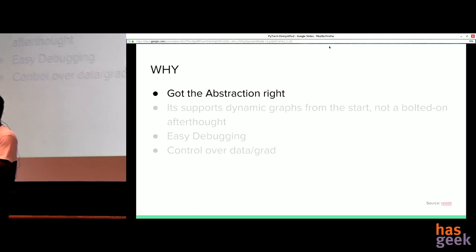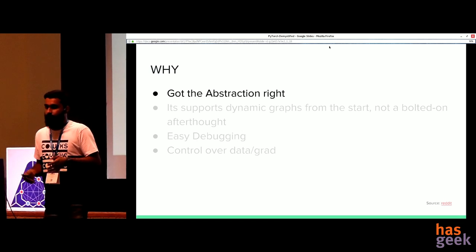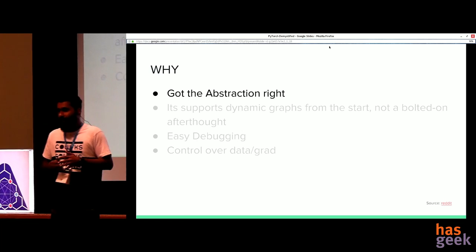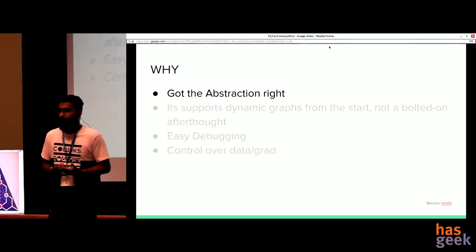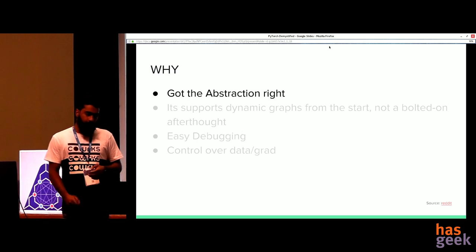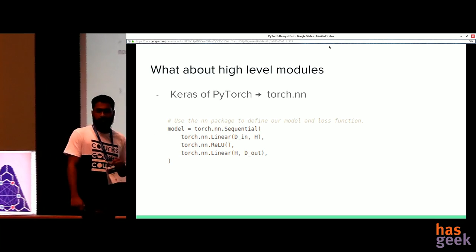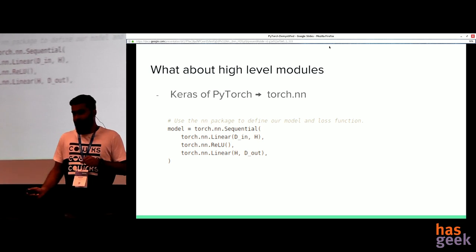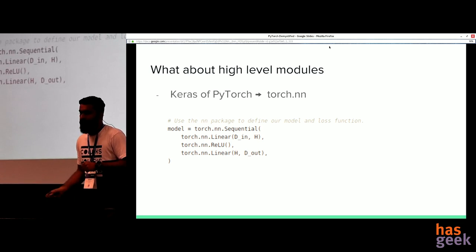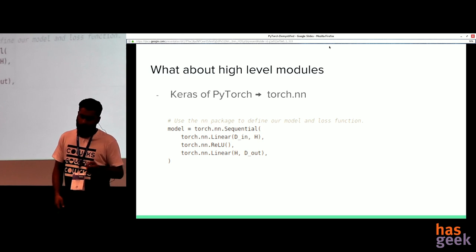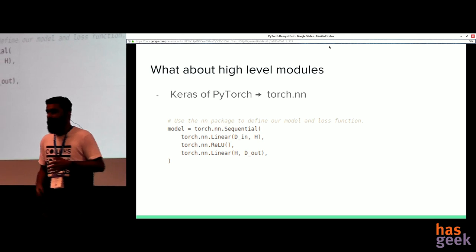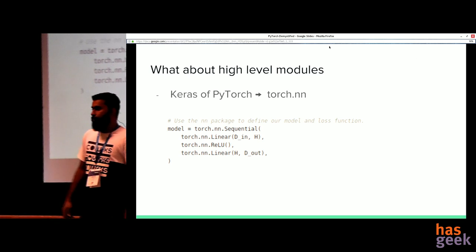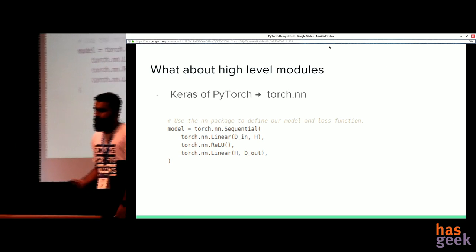These are the four reasons I want to put across to convince you to switch. First: abstraction. torch.F has all the functional modules; torch.autograd has everything related to automatic differentiation; and they have a high-level module just like Keras. The Keras equivalent in PyTorch is torch.nn — you have all the high-level layers there: the Sequential module, Linear layer, ReLU layer — you can call them by torch.nn.LayerName.